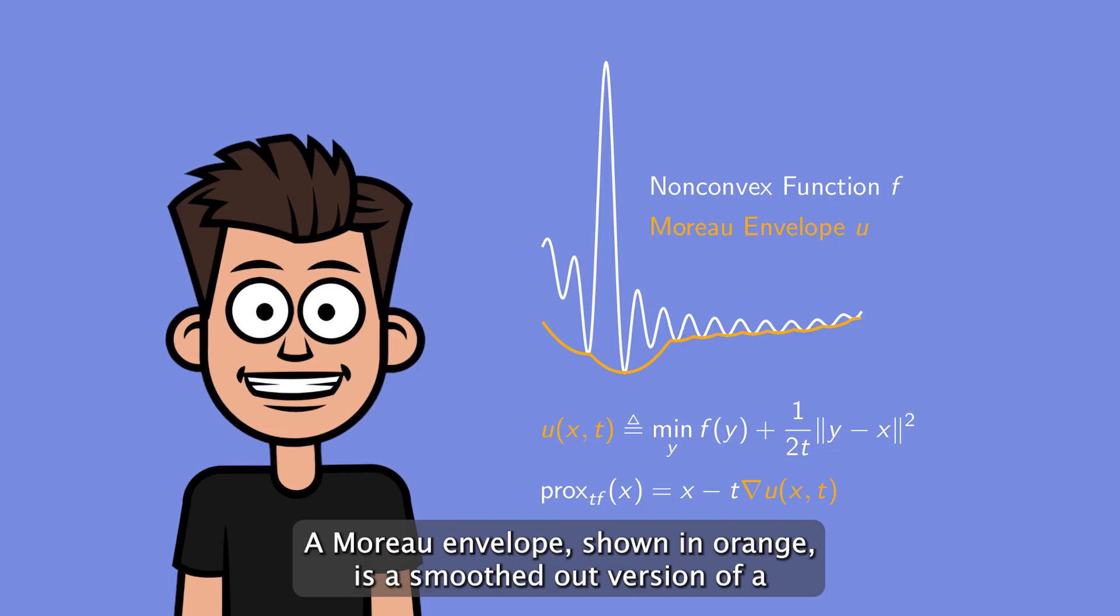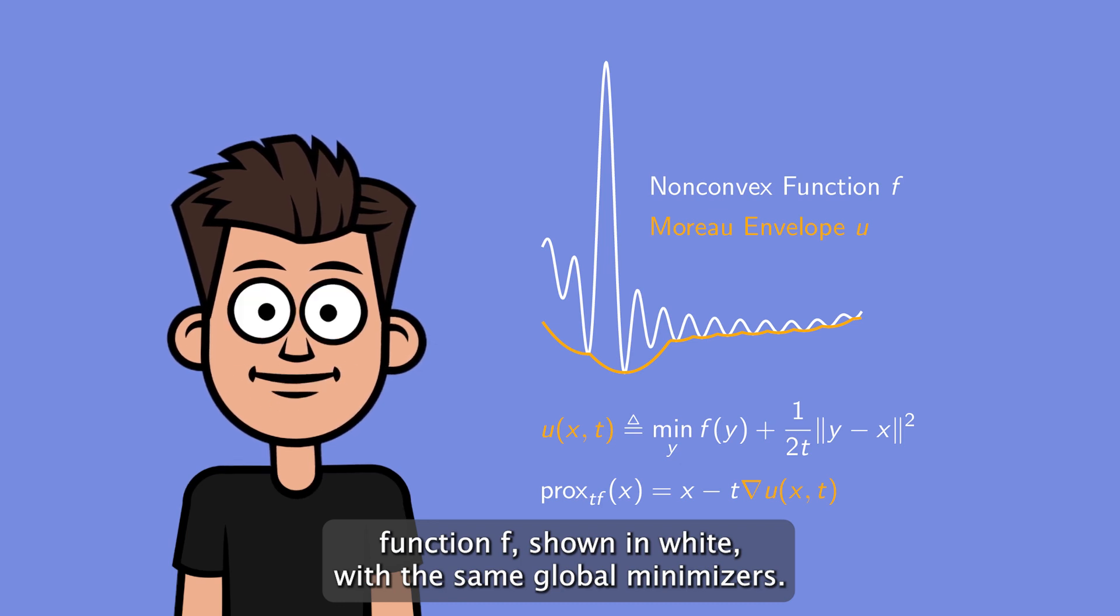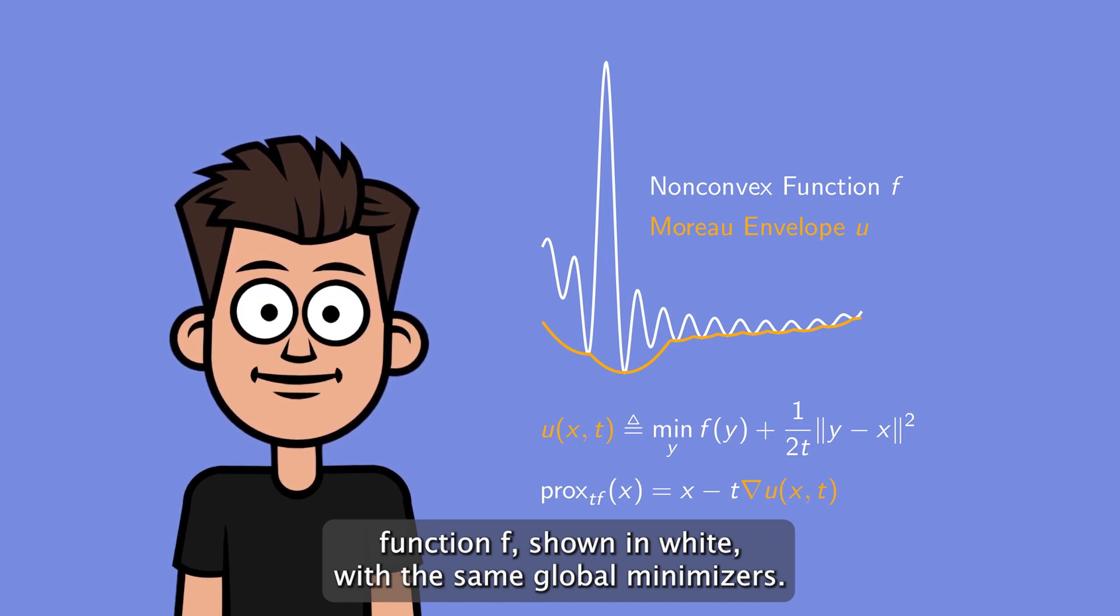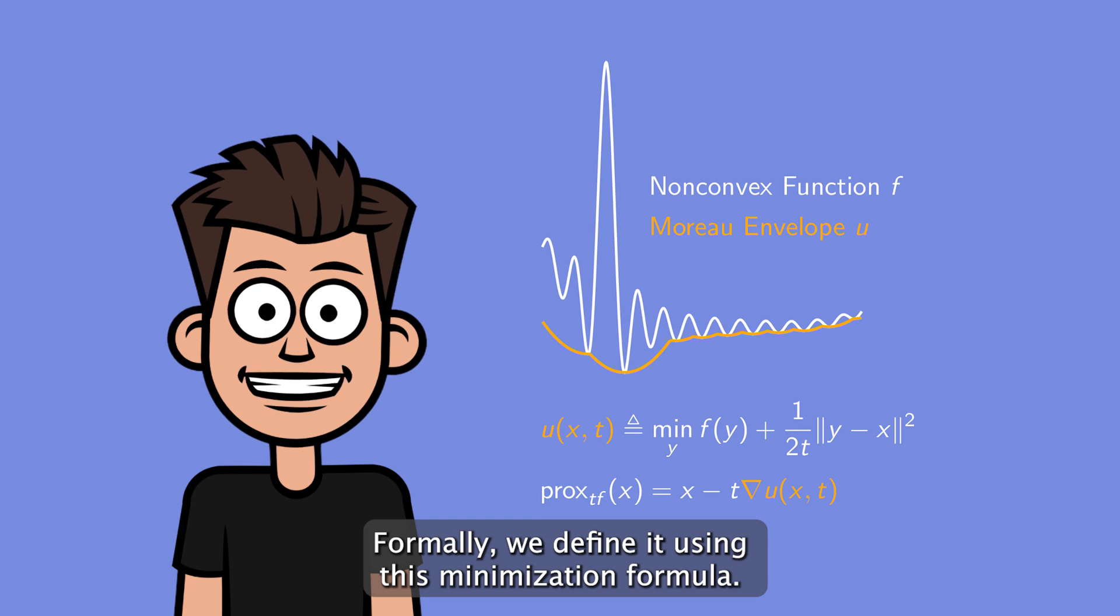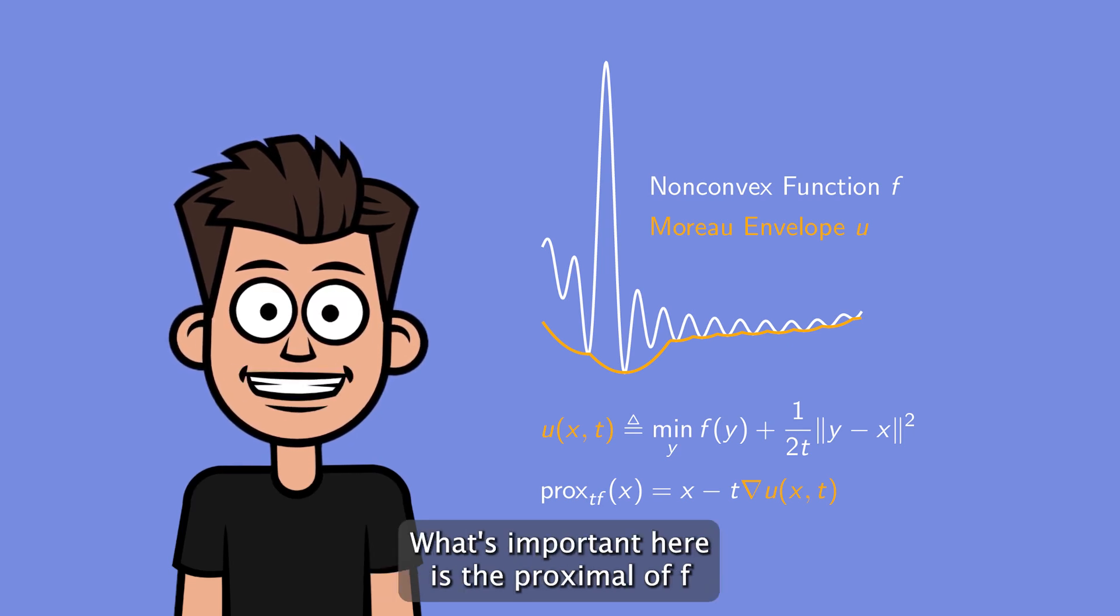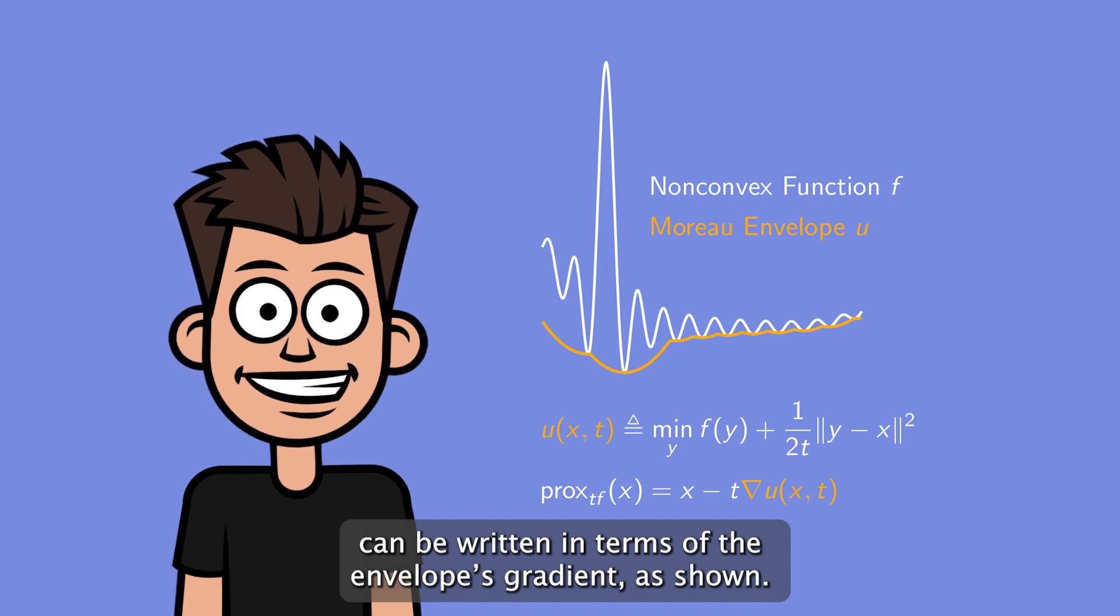A Moreau envelope, shown in orange, is a smoothed out version of a function f, shown in white, with the same global minimizers. Formally, we define it using this minimization formula. What's important here is the proximal of f can be written in terms of the envelope's gradient, as shown.